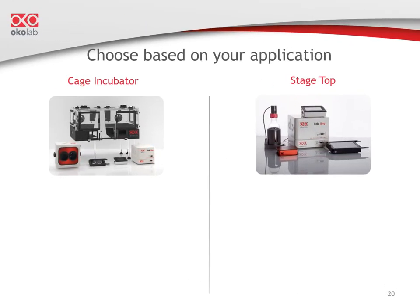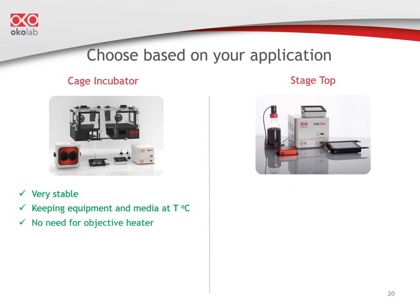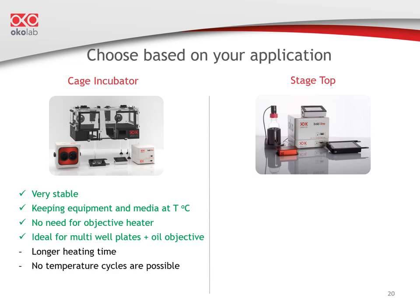When selecting your incubation system, think about your lab setup and application. A cage incubator is extremely stable — the enclosure protects your sample from drafts and room temperature fluctuations. If you're doing perfusion, you can place pumps, media, and other equipment inside the enclosure to equilibrate to 37 degrees. You never need an objective heater, so if you're mostly imaging multi-well plates with oil immersion objectives, a cage incubator is highly recommended. Note that it takes longer to heat up due to the enclosure volume, and you can never do temperature cycles.